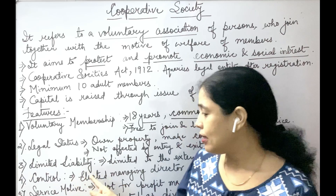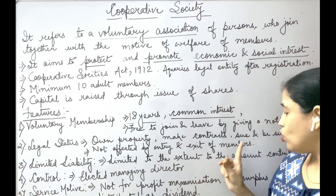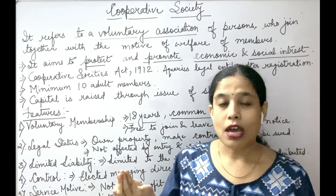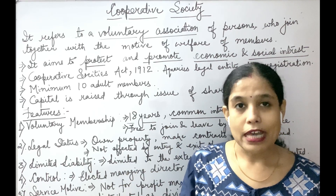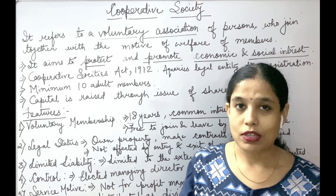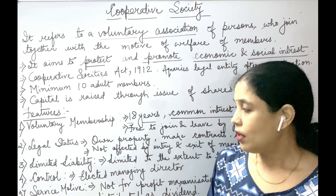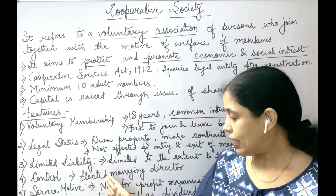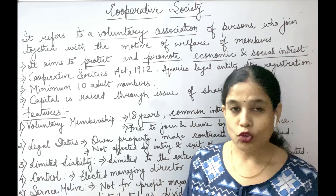The third feature is limited liability. The liability of members is limited to the extent of the amount contributed — that is, only the amount subscribed as shares is what a member stands to lose in case of any loss.